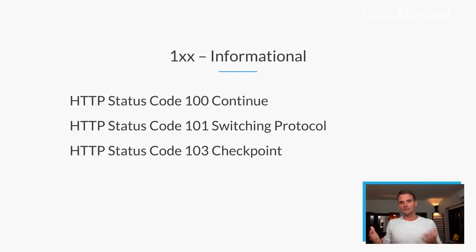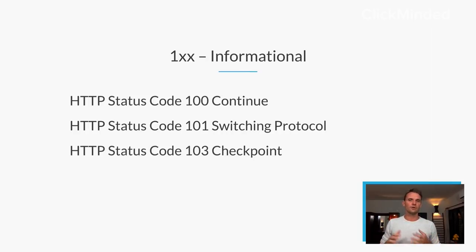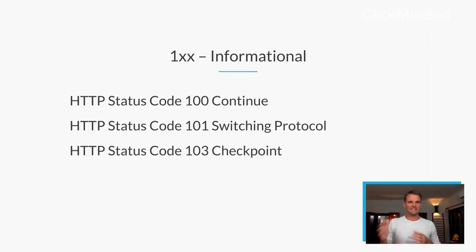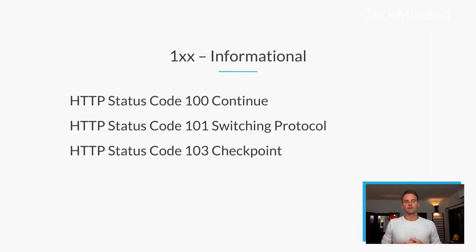The 100 block — these are informational requests. Basically the server hasn't fully completed the request yet and it's still thinking. It's kind of a transitional phase. You're not going to see this much, but just so you know: status code 100 is Continue, 101 is Switching Protocol, and 103 is for Checkpoints. The server has not yet completed the request.